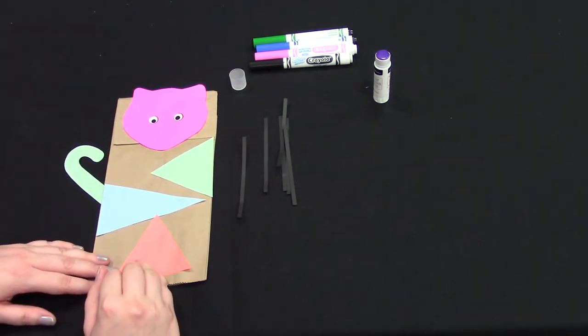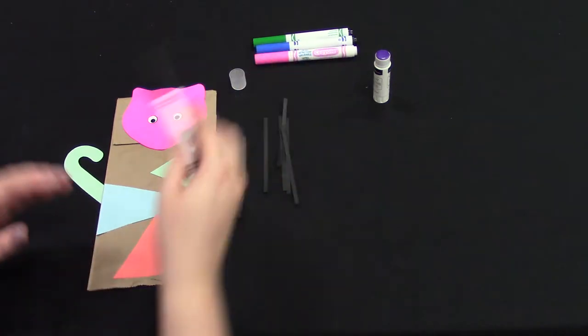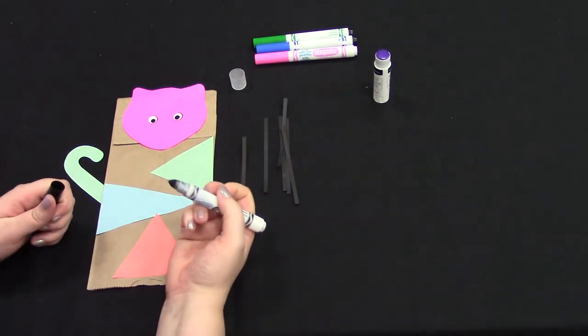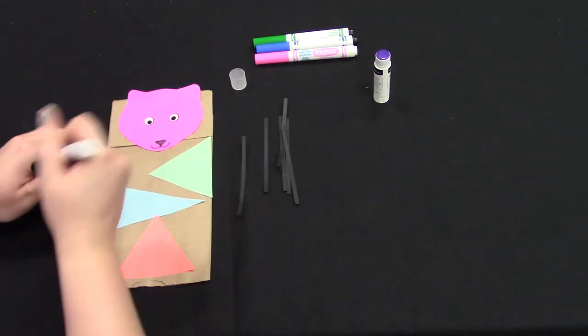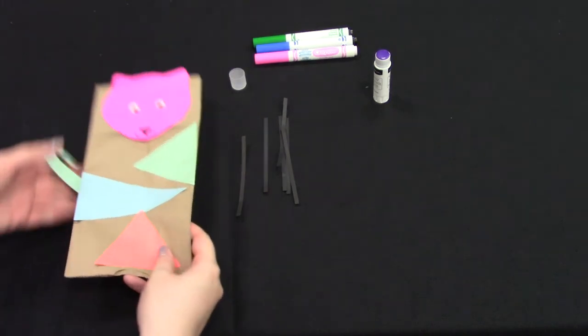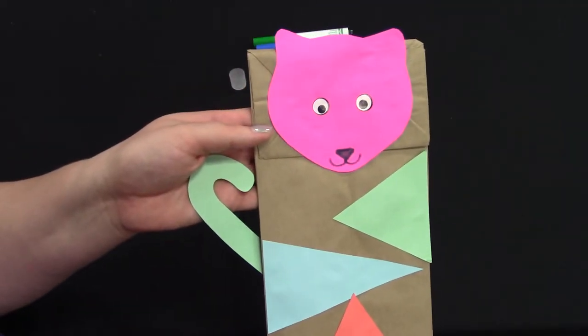Next, using the markers, draw a nose and a kitty cat mouth. I'm going to use black, but you can use whatever color makes you happy.